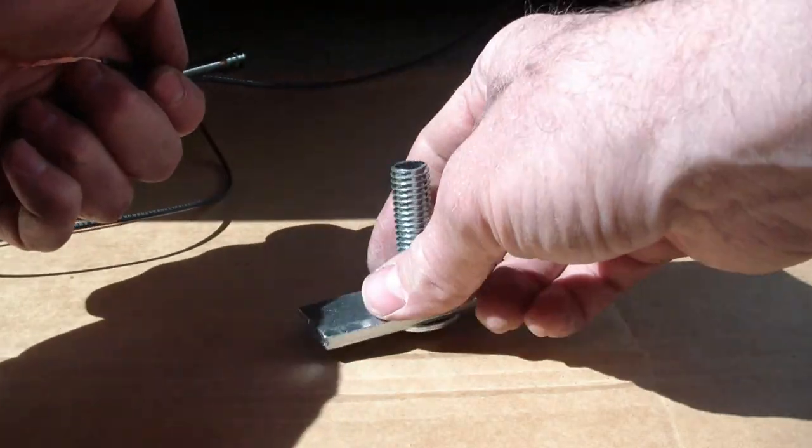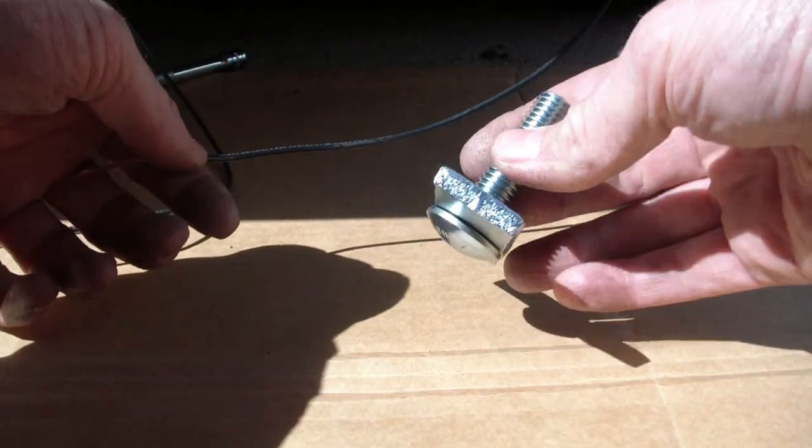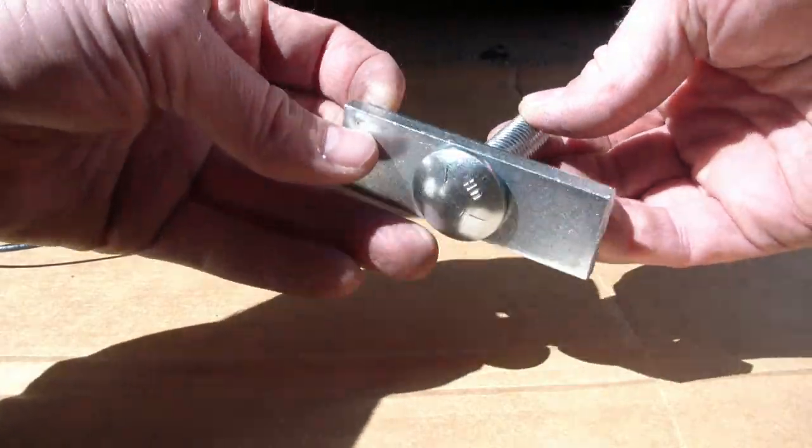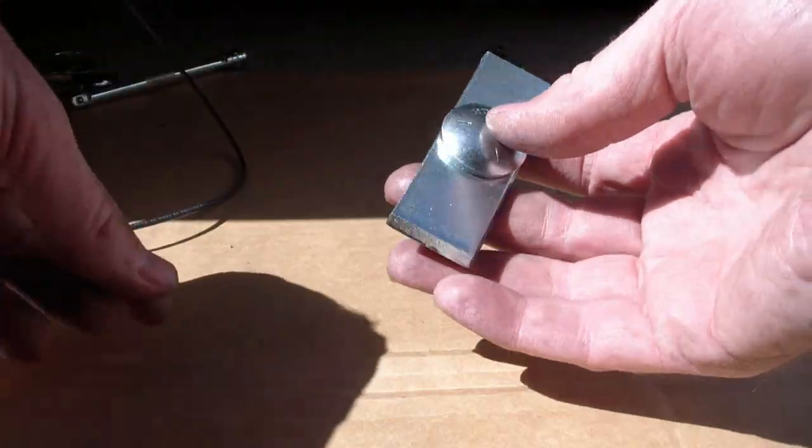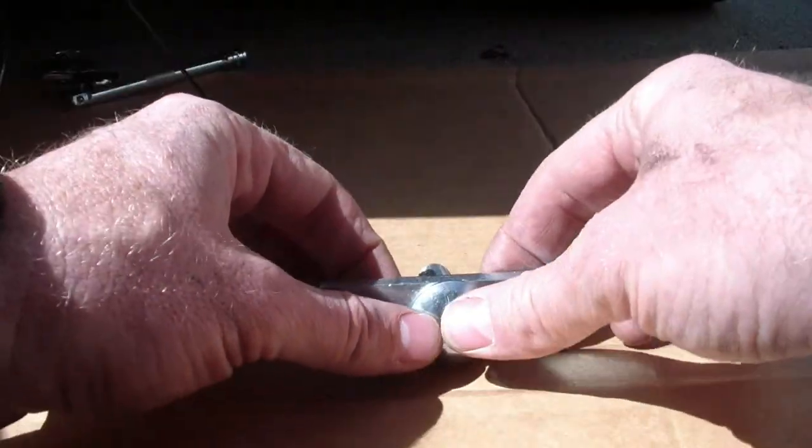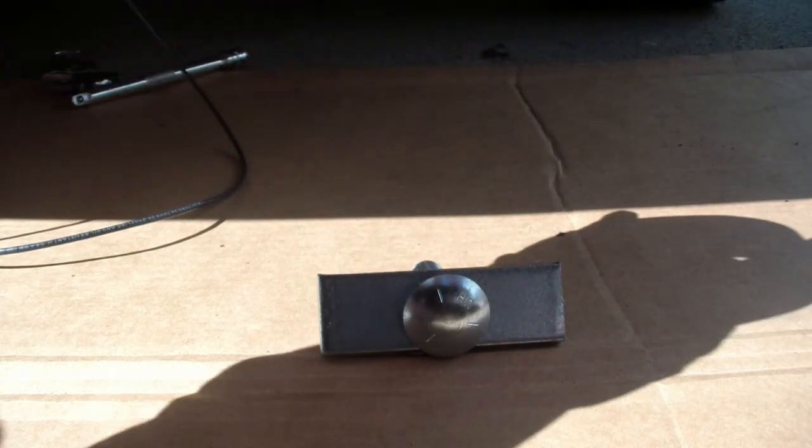And this operation, duct tape is your friend. So we'll be able to shove the bolt and the whatever the hell you call this thing up in there. And we want the bolt to stay in the washer. So I'm going to duct tape it in there from the back side.